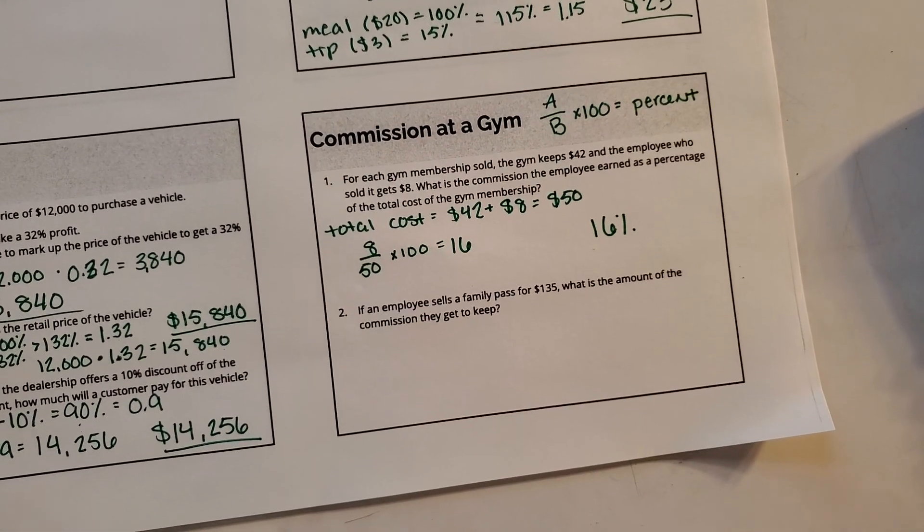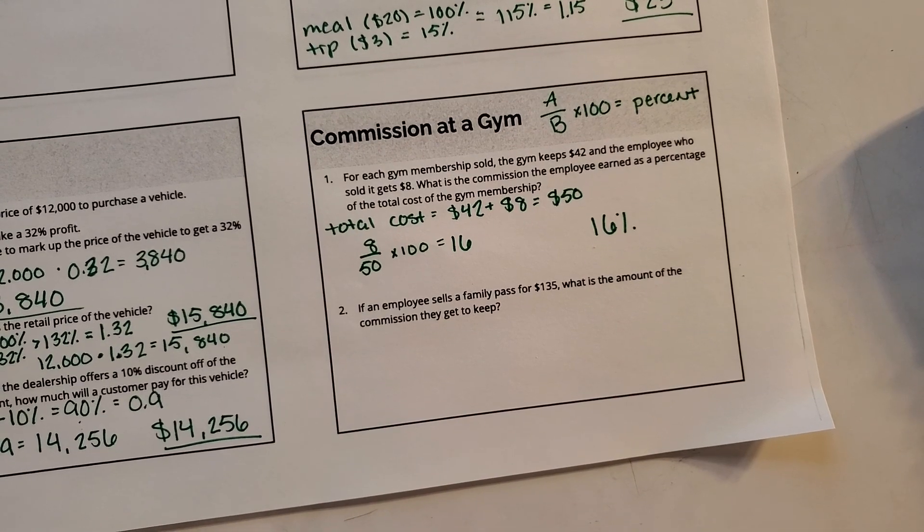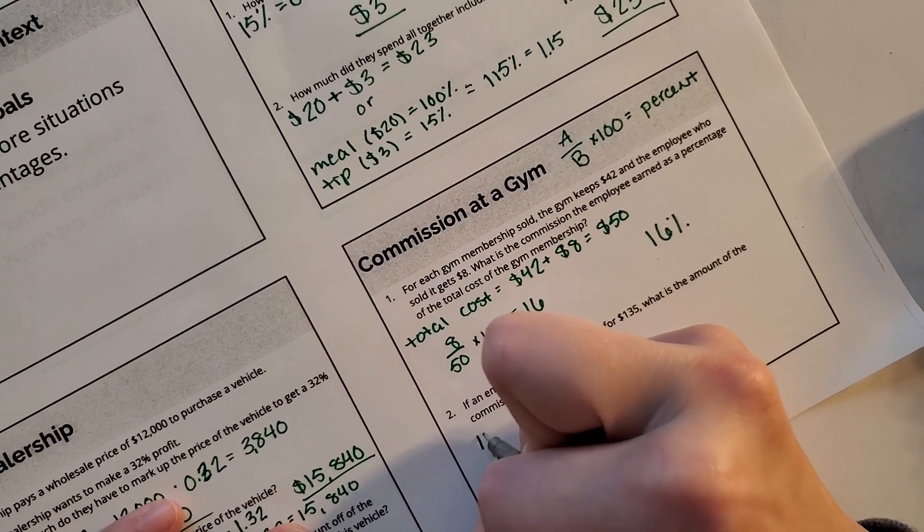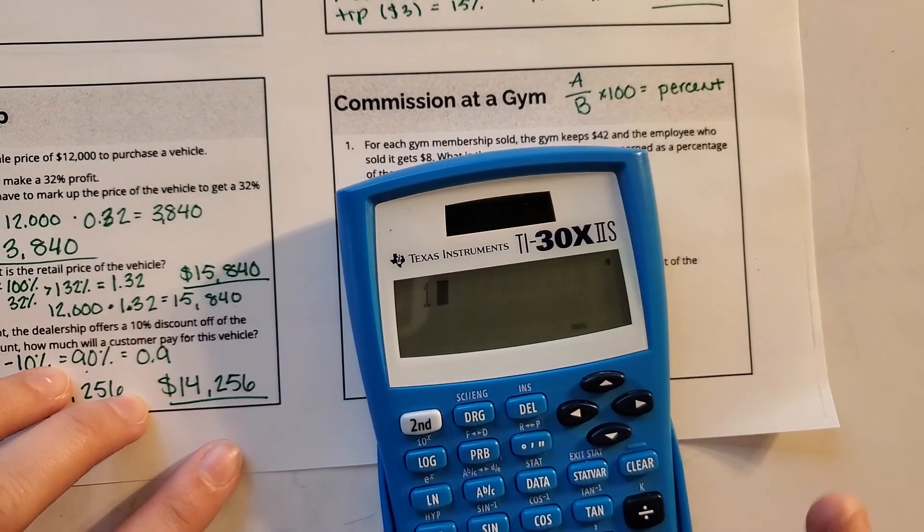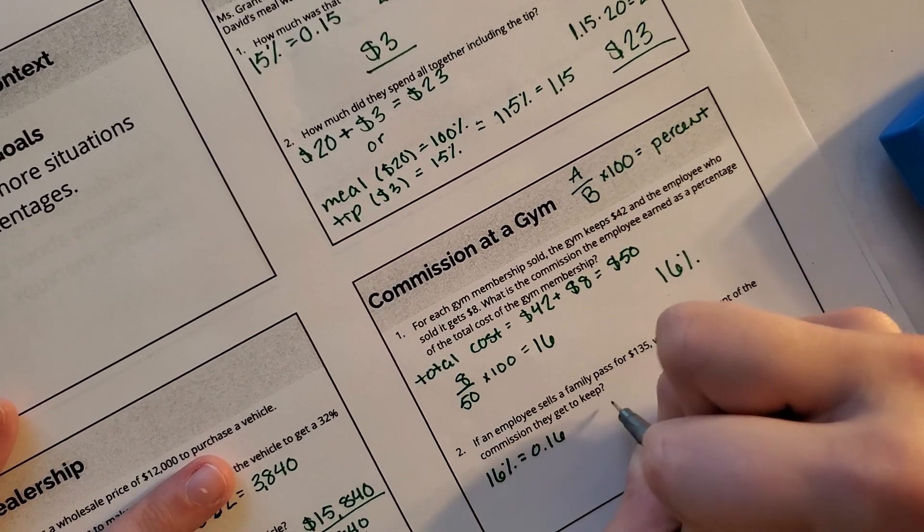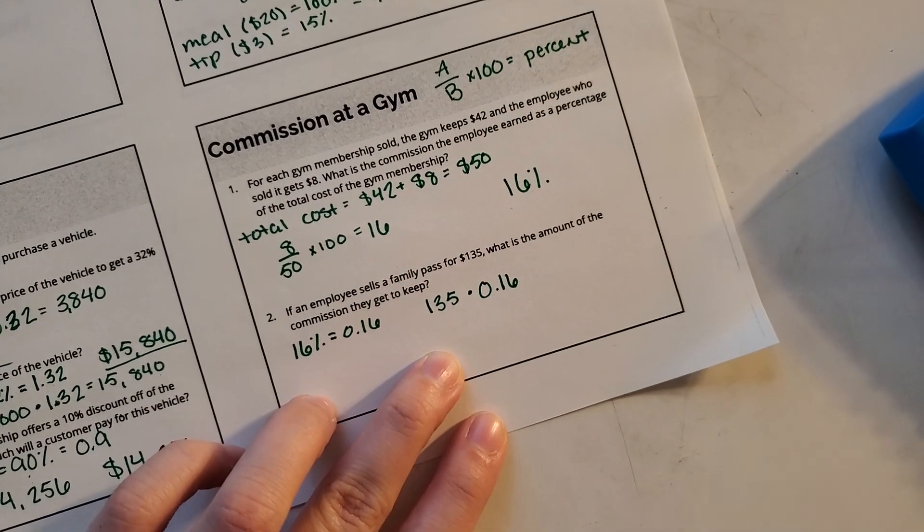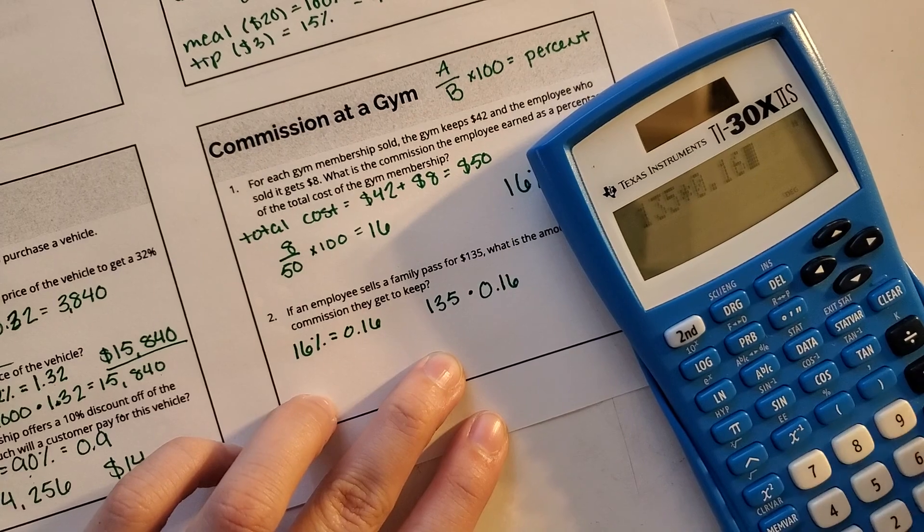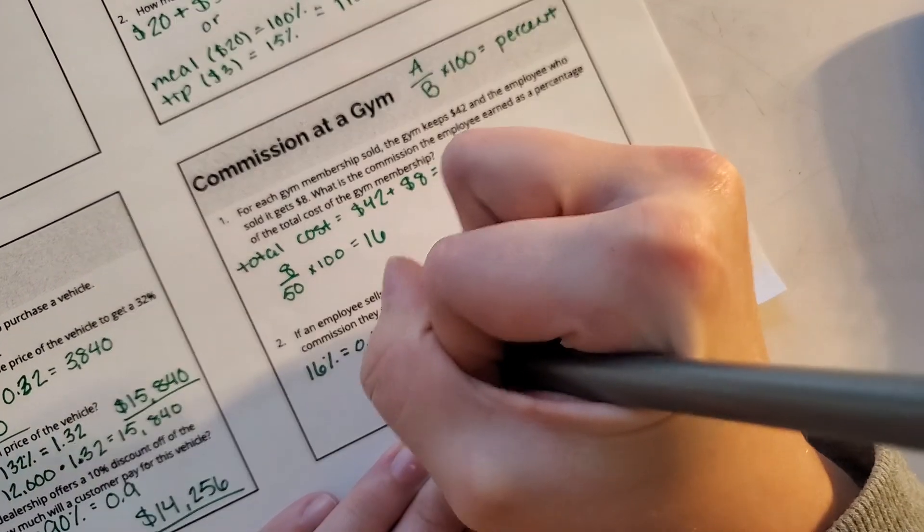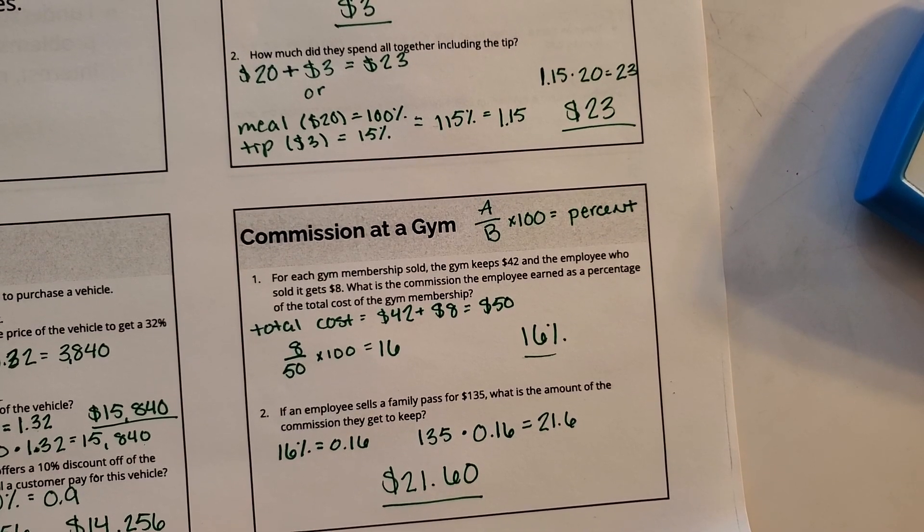So now it's still the same 16% rate and this employee sells a family pass for $135. What is the amount of commission they get to keep? What is 16% of $135? We need to turn 16% into a decimal by dividing 16 by 100, which gives me 0.16. And now I take my $135 and multiply it by 0.16, and it gives me 21.6. In money terms, that would be $21.60.